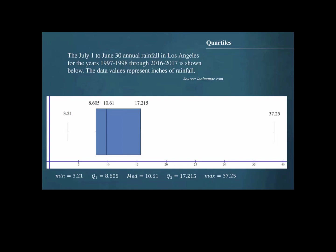This box will also have a vertical line that marks the median value of 10.61. The box plot is completed by drawing a horizontal line that extends from the minimum value to the center of the box, and a similar horizontal line that extends to the maximum value.